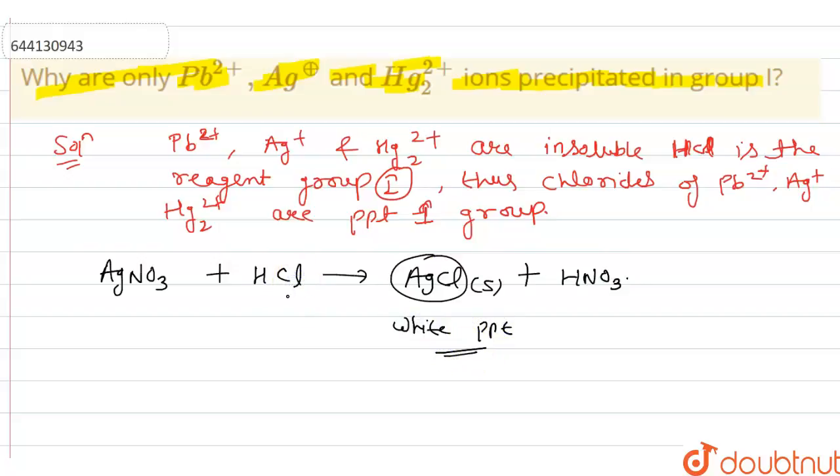This is the balanced equation. Other cations remain in solution because their chlorides are soluble.